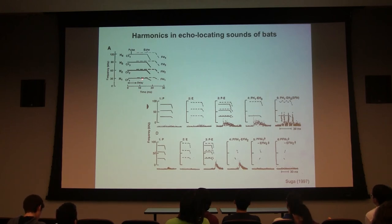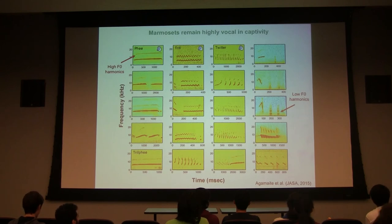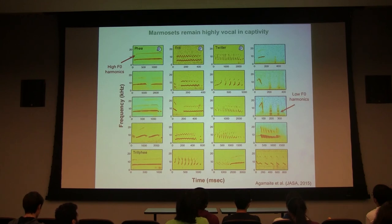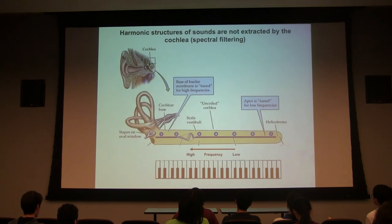Frequency response tuning curves in the auditory nerve and much of the ascending pathway show a single-peaked response — one best frequency. But somewhere in the cortex, people begin to observe neurons tuned to more than one frequency. There are neurons tuned to two, three, or even four frequencies, and these frequencies are harmonically related. This is the basis of harmonic and pitch detection.